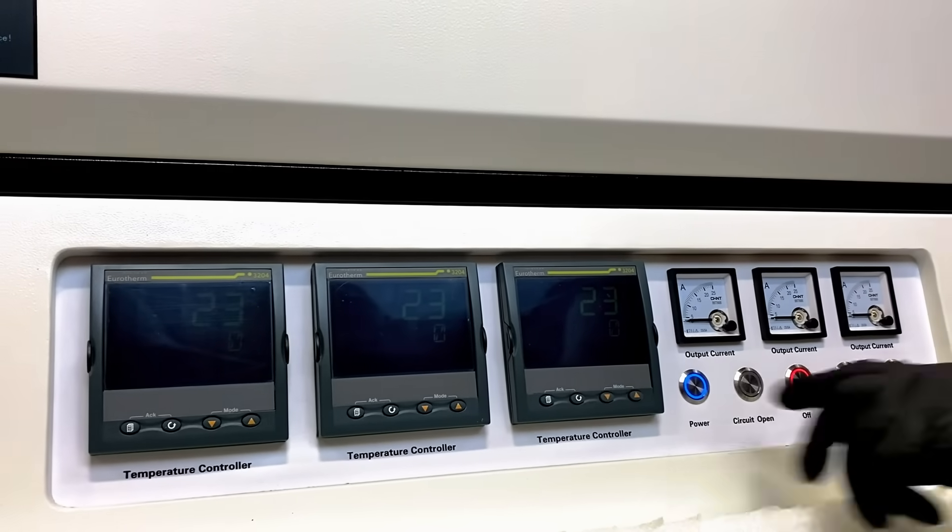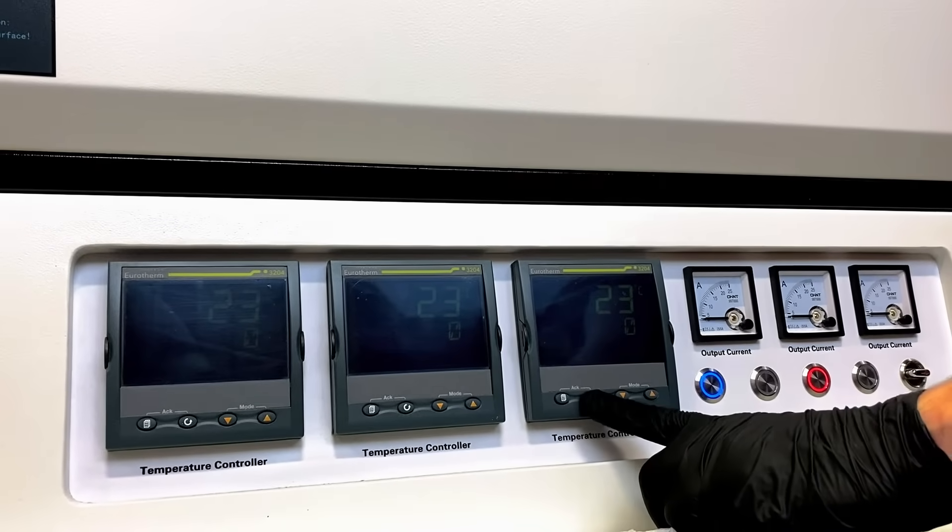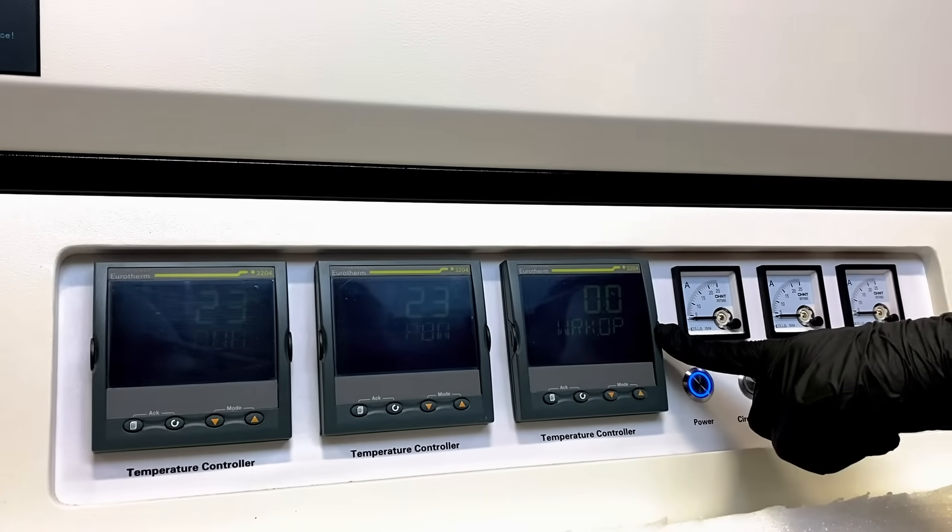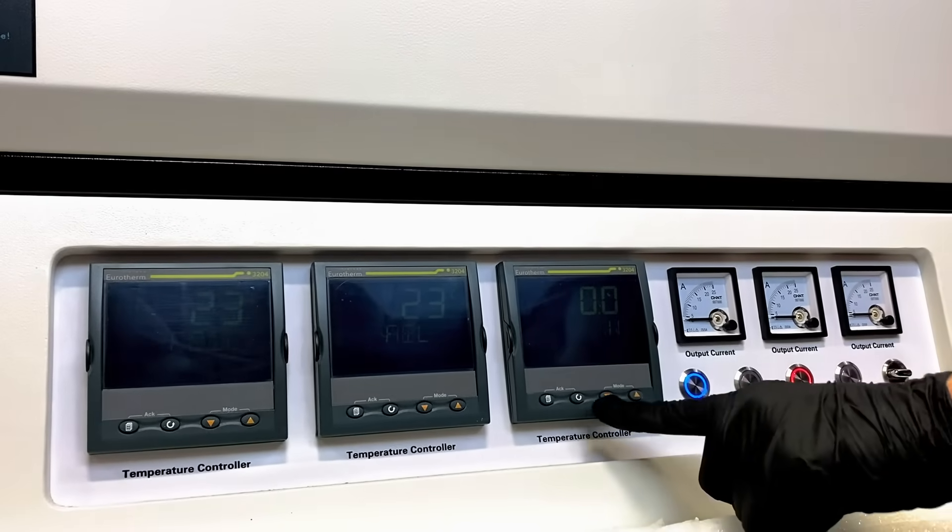Then, in order to set our program, we will press the cycle button. This is the working operating parameter that's set by the program, so we will leave this alone and press cycle again.